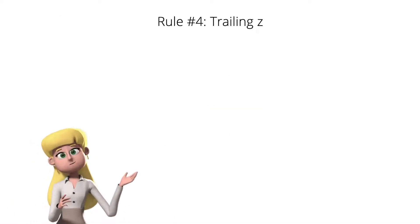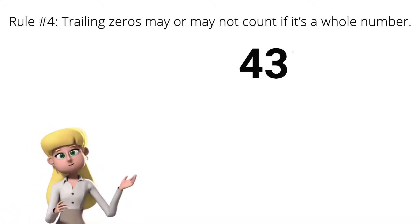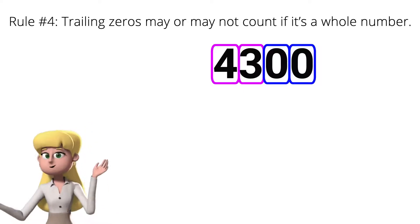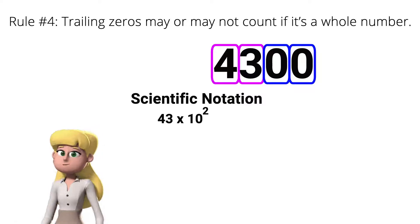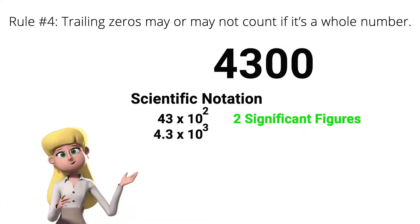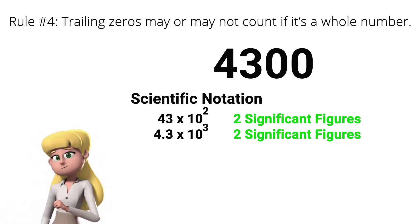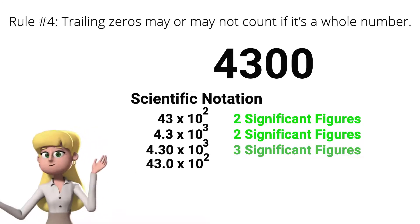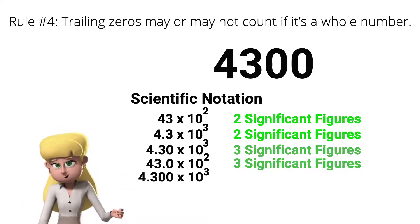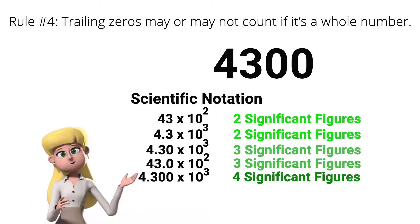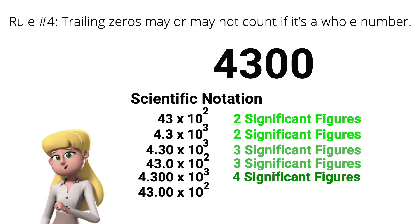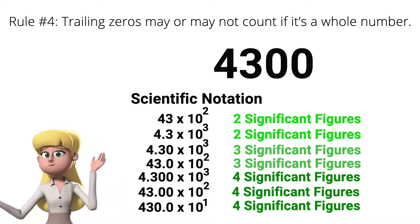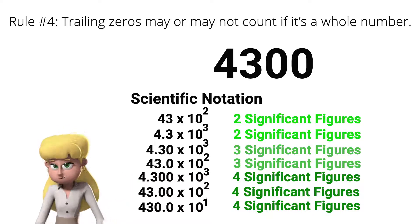Rule number 4: trailing zeros may or may not count if it is a whole number. If I have 4,300, I could have 2 up to 4 significant figures. We could write it in scientific notation like 43 × 10² for 2 significant figures, 4.3 × 10³ for 2 significant figures, 4.30 × 10³ for 3 significant figures, or 4.300 × 10³ for 4 significant figures. We vary the decimal places in scientific notation, but the value is still the same.